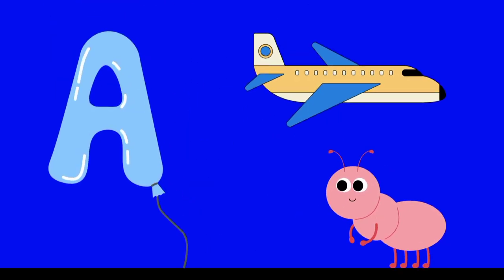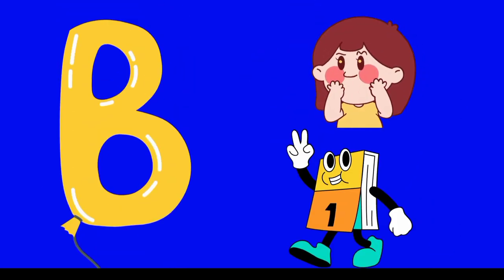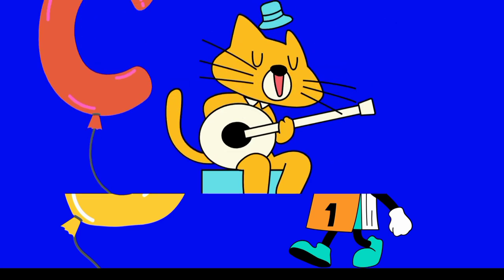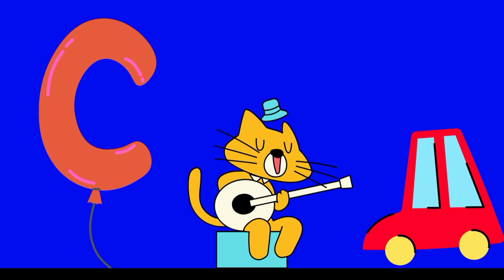A is for ant and A is for aeroplane. B is for book and B is for baby. C is for cat and C is for car.